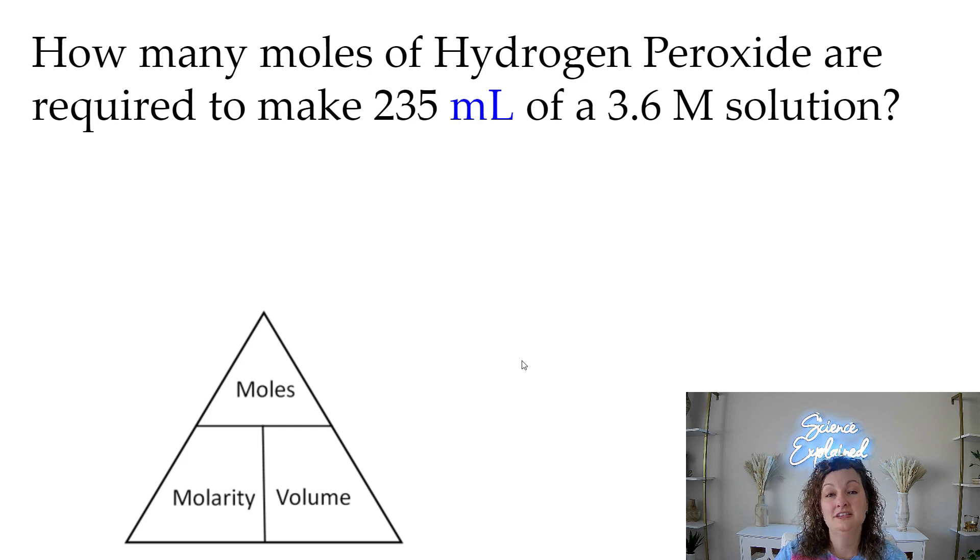Let's step it up and do some conversion too. So how many moles of hydrogen peroxide are required to make 235 milliliters of a 3.6 molar solution? So what are we looking for here? We're looking for moles, which means we're going to multiply, but I cannot put milliliters into my calculator and get the right answer.